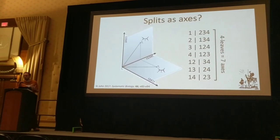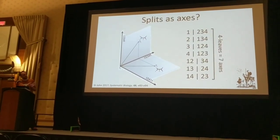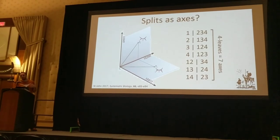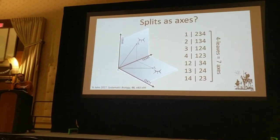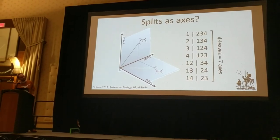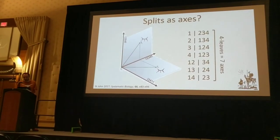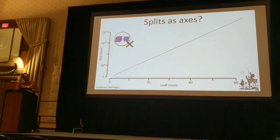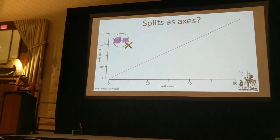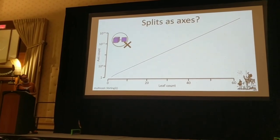Other things we could do is conceive of our space as having axes decided by splits, effectively modelling it as a hypercube. But even with very small numbers of tips — for four tips you need seven axes to model that space — and we can extrapolate that forwards using Stirling numbers of the second kind. Again, this takes us into a dimensional landscape we can't really visualise.